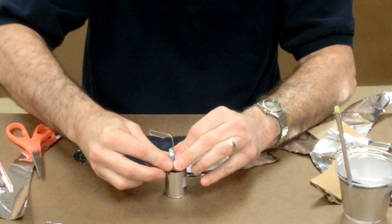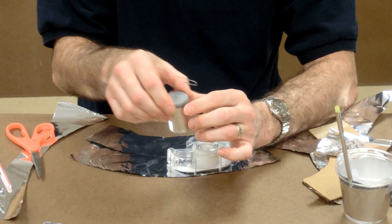So this one's called the film canister Leyden jar. The second one we can make is called the drink cup Leyden jar, or the plastic cup Leyden jar.